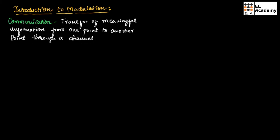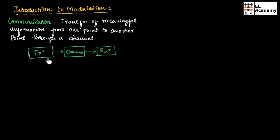Generally, a communication system consists of three important blocks. It consists of a transmitter, channel, and a receiver. The transmitter is used to transmit the message signal through a channel, and a receiver will receive this message signal.